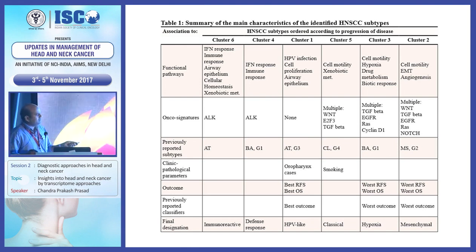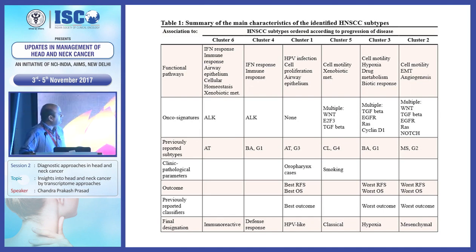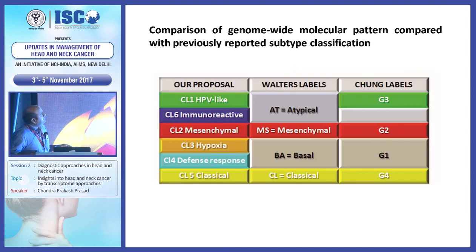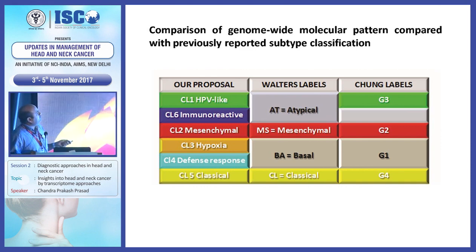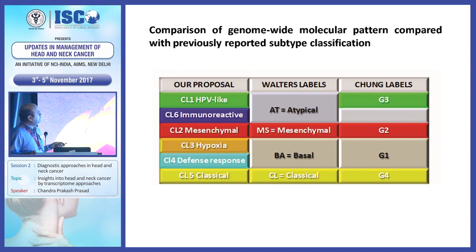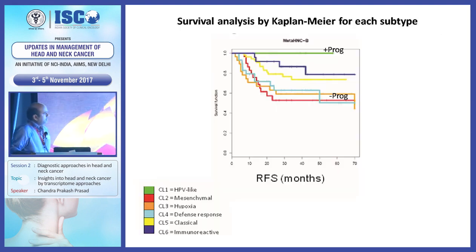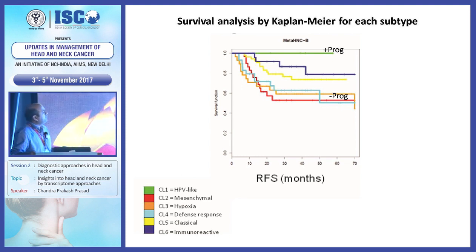They found signatures distinct to these subtypes and the functional pathways associated with them. They compared their subtypes with already published subtypes, such as Walter labels and June labels. HPV-like and immunoreactive types responded to chemo, mesenchymal is mesenchymal, hypoxia and basal showed different responses. Survival analysis revealed that cluster 1, which is HPV-like, shows positive prognosis, while clusters 2 and 3 — mesenchymal and hypoxia — have poor prognosis.